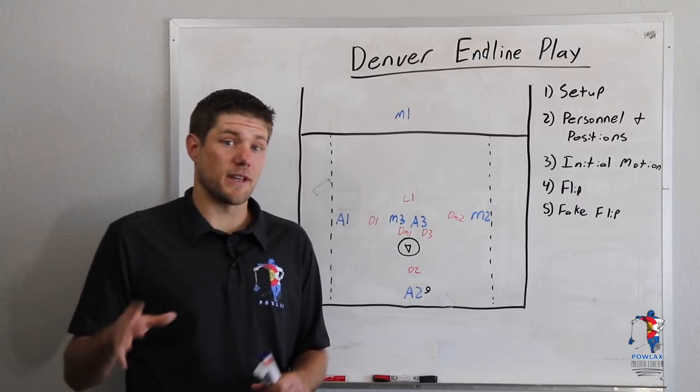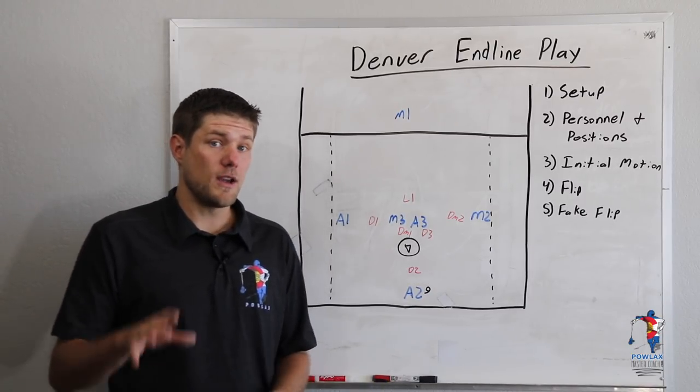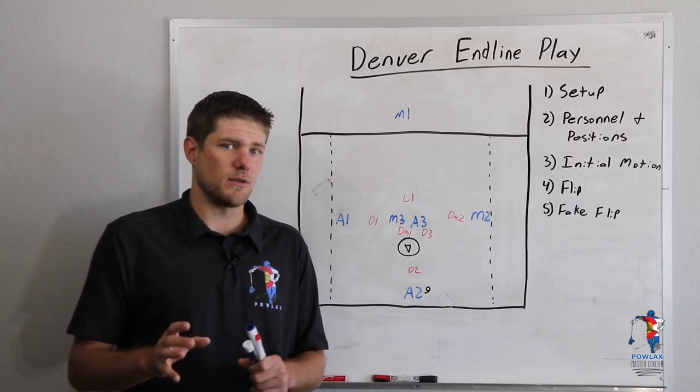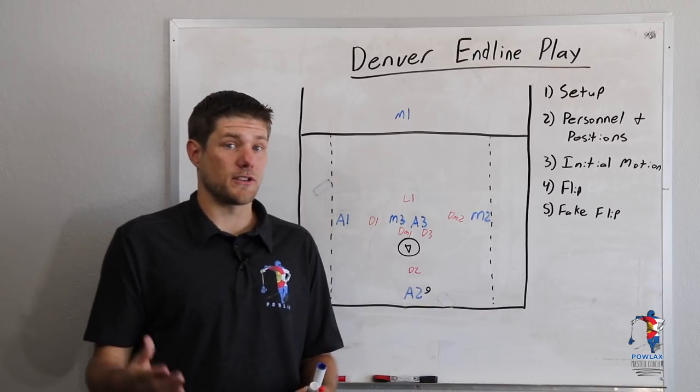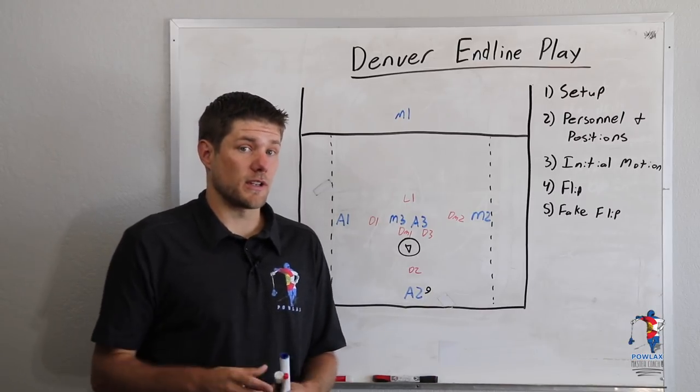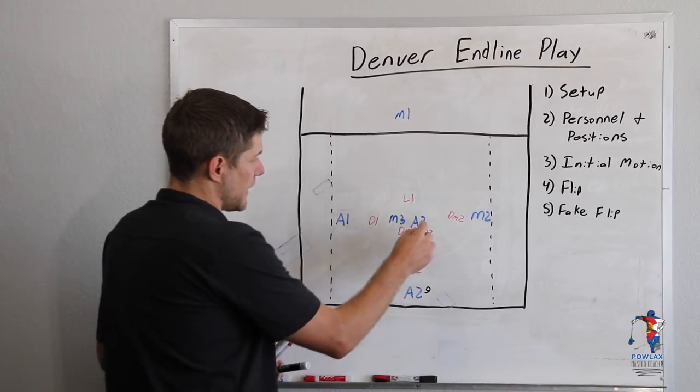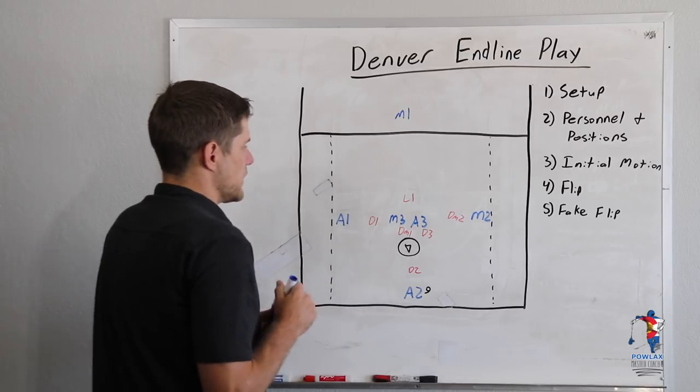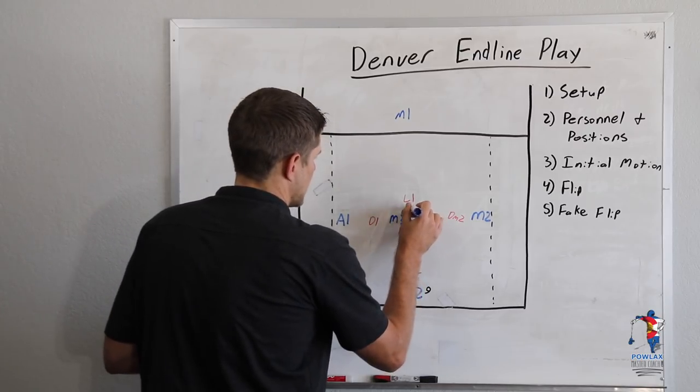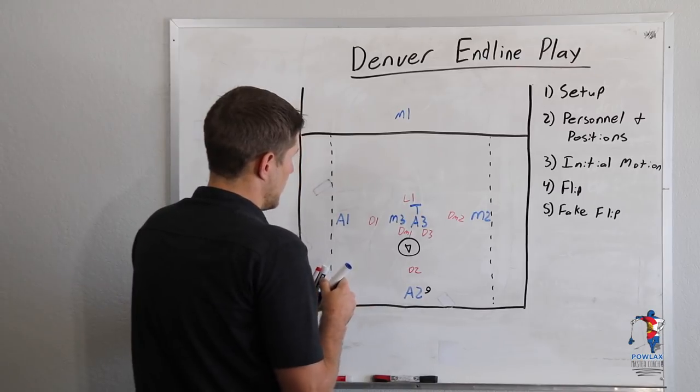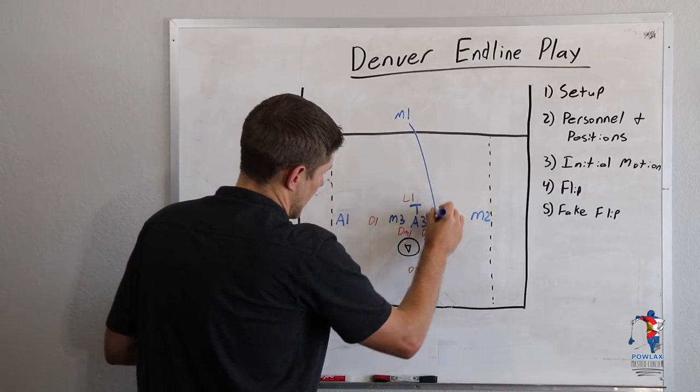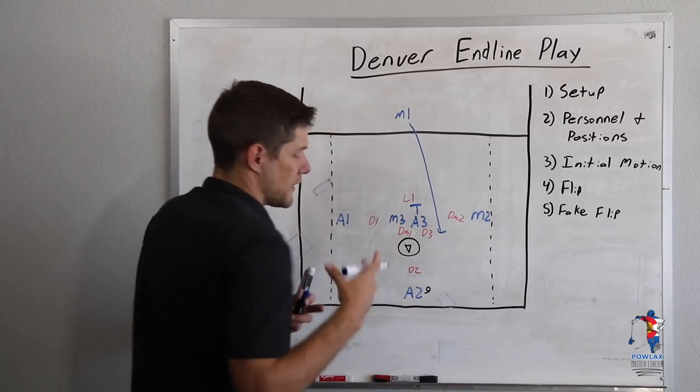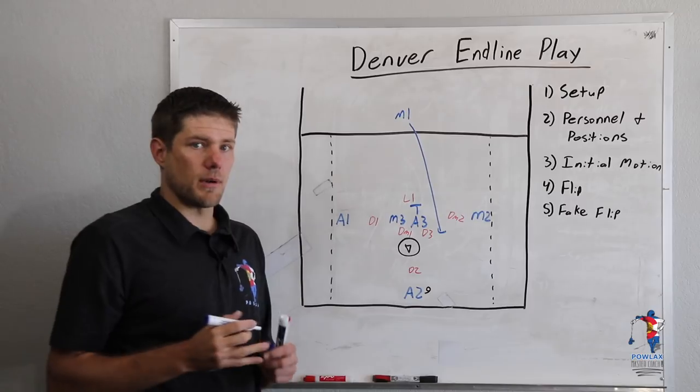Now let's get into the actual play. So because we have two separate options for this play, we're going to go through the initial motions, talk about exactly what we're trying to do, and then we'll go through how the play actually finishes up. So the first thing that we're going to talk about is some off ball movement. We want to end up freeing up A3, or Wesley Berg. So the first thing that we are going to do is we're going to have him come up and he's going to set an up pick right here on the LSM so that M1 can cut down this way. This is going to draw a lot of attention to the right side of the field, and it's really going to help to free up our final shooter.